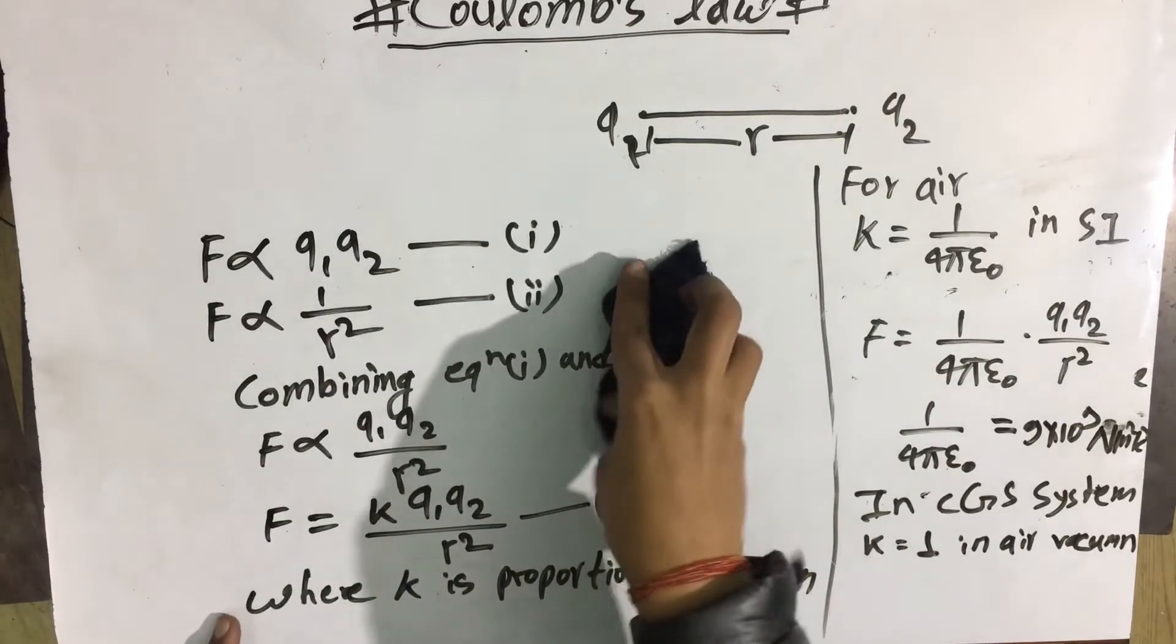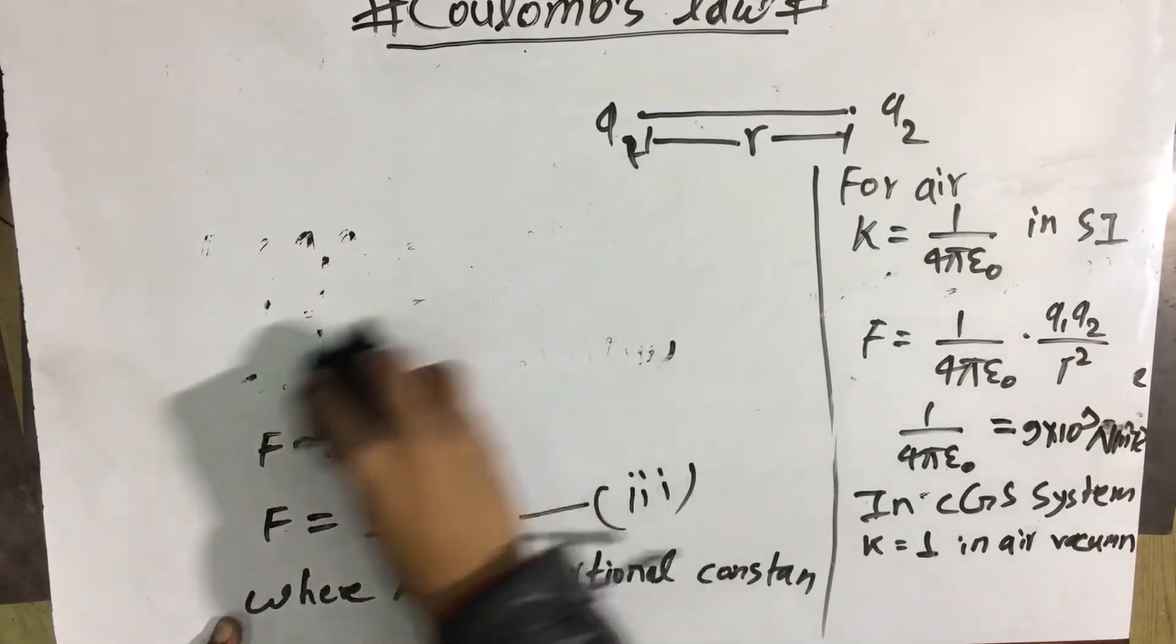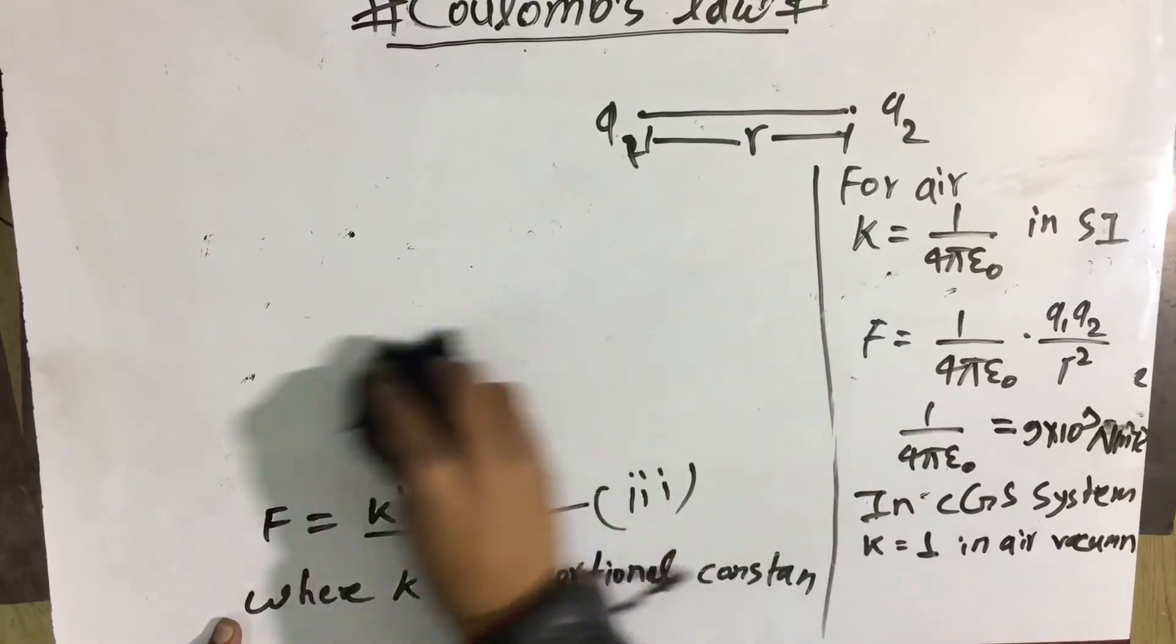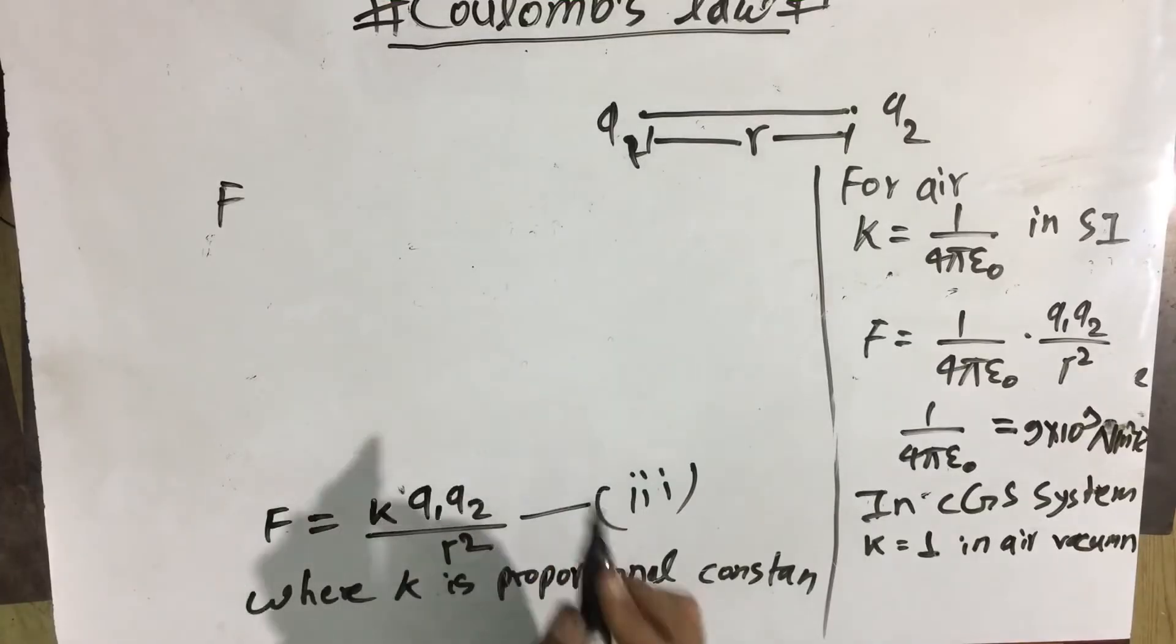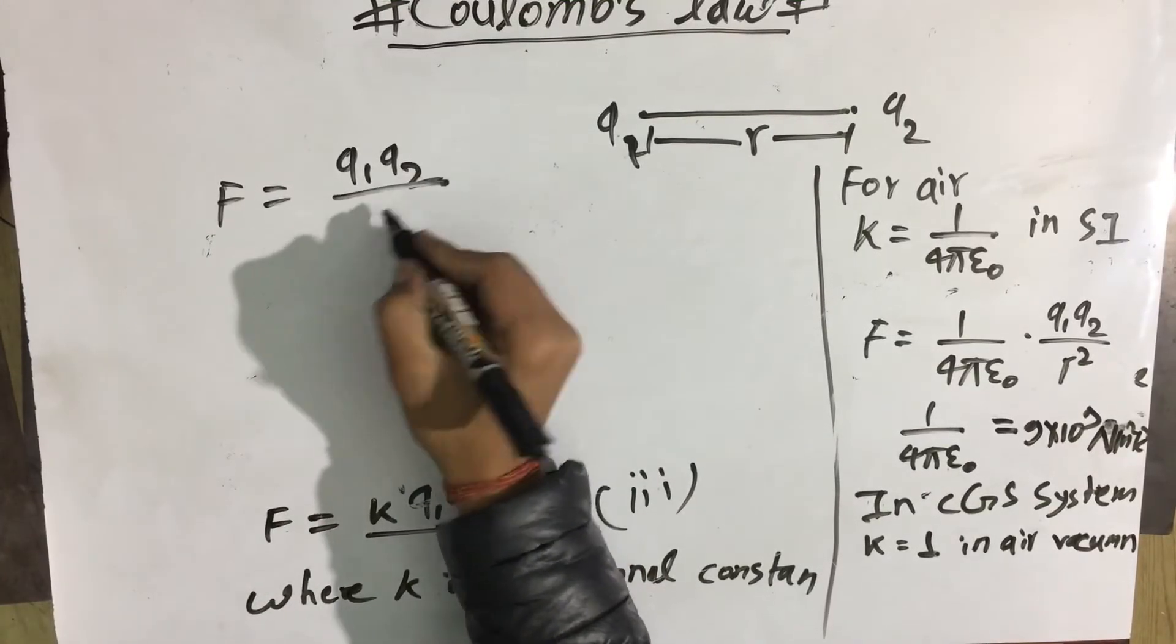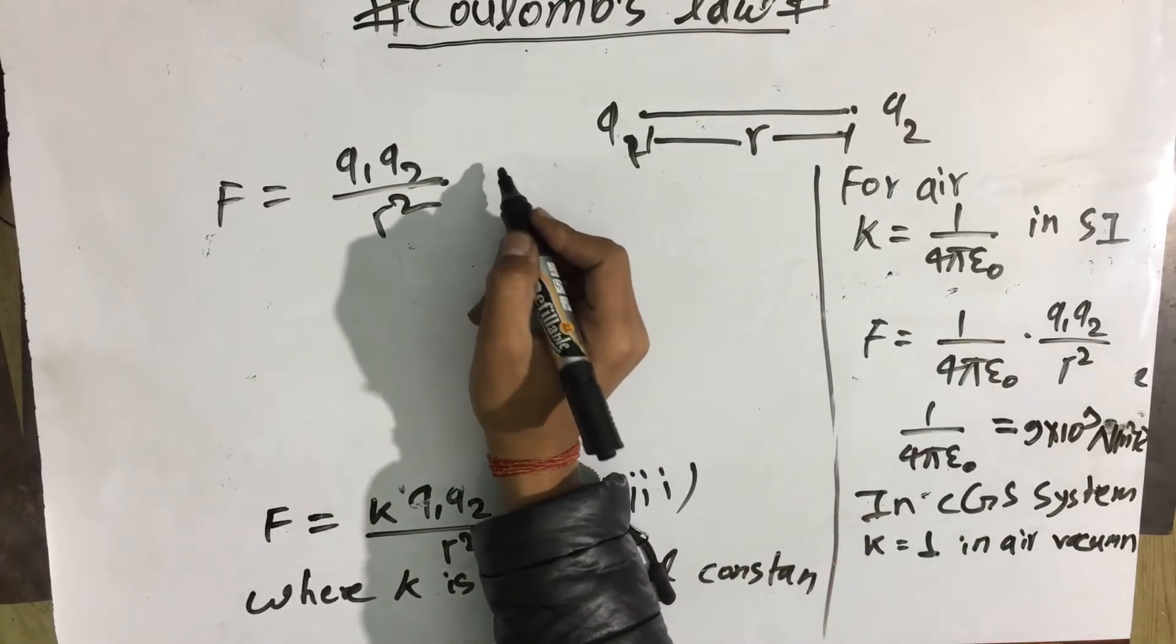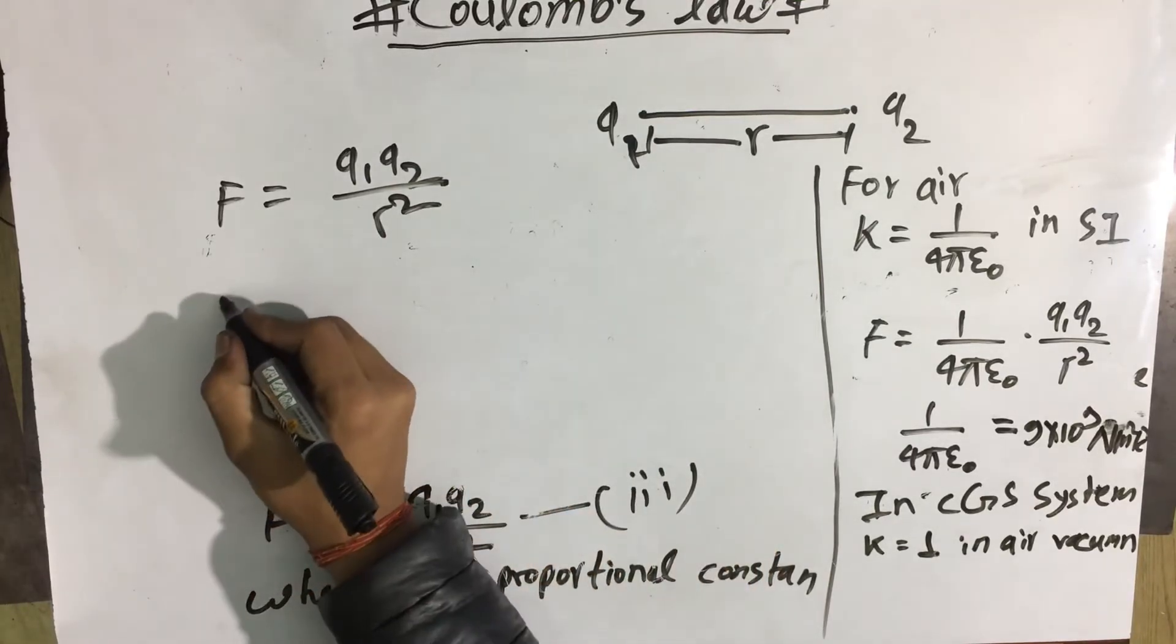From equation 3, F equals q1 q2 by r square in CGS system for air or vacuum.